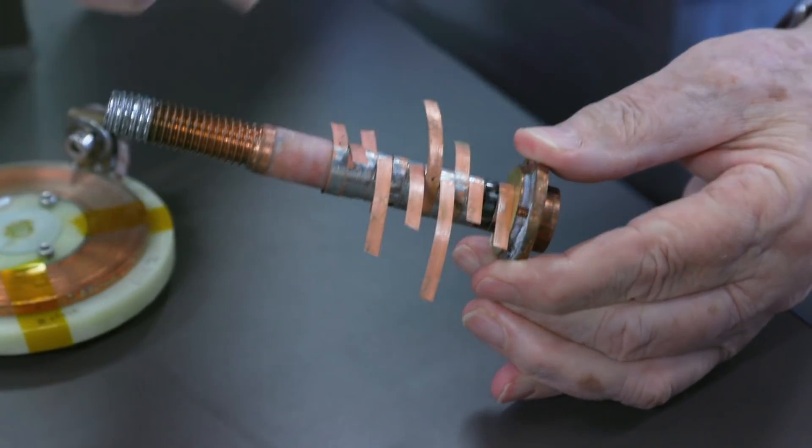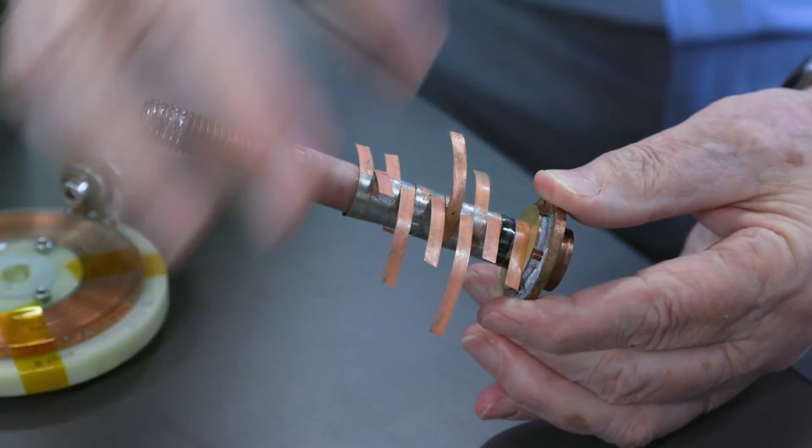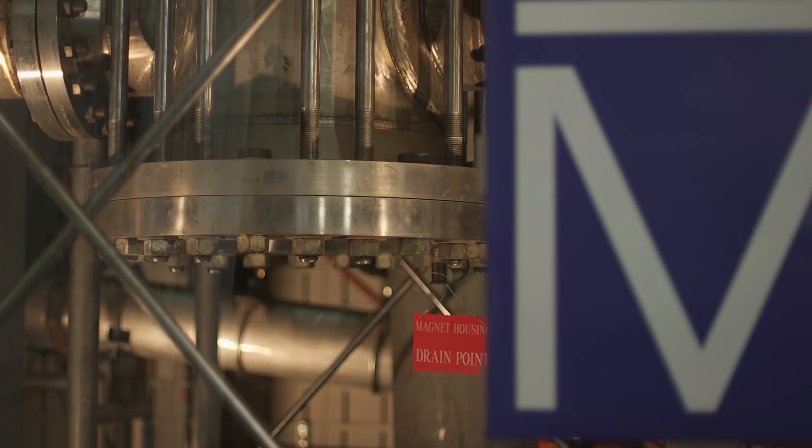What we've done with this test coil is to show the way forward, which is to use much better superconductors. We were able to get very early examples of these and test them inside one of the lab's resistive user magnets.